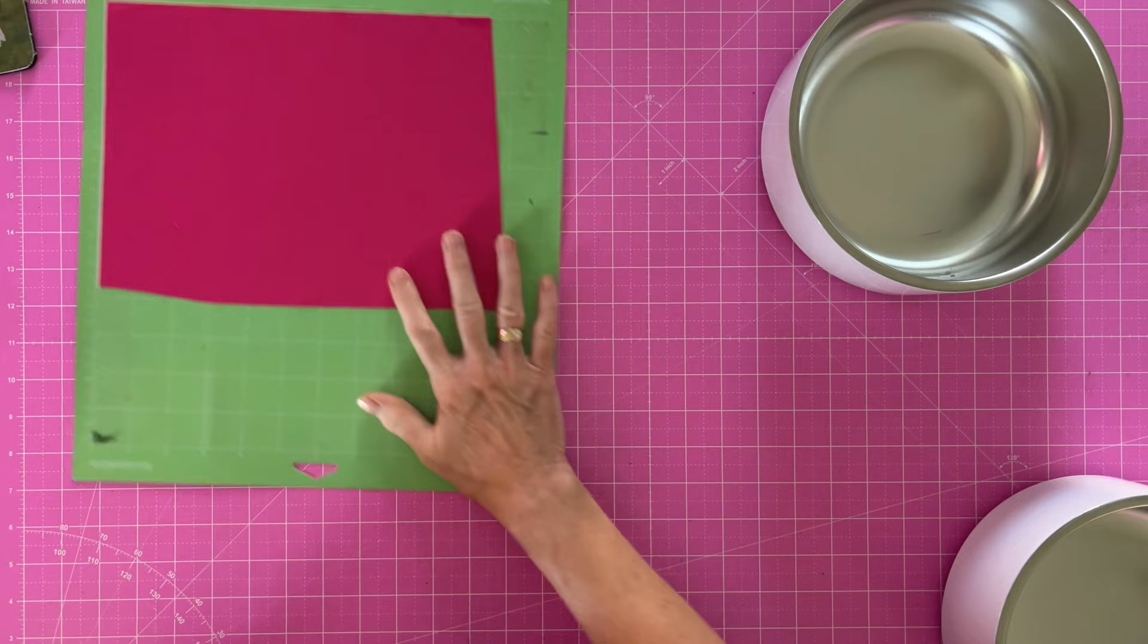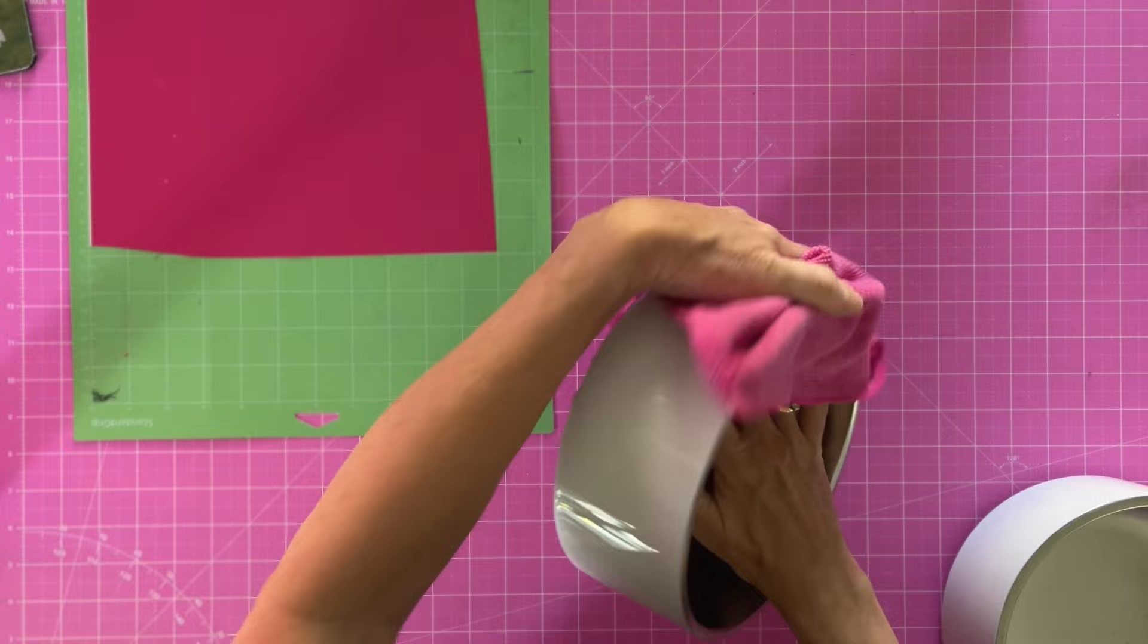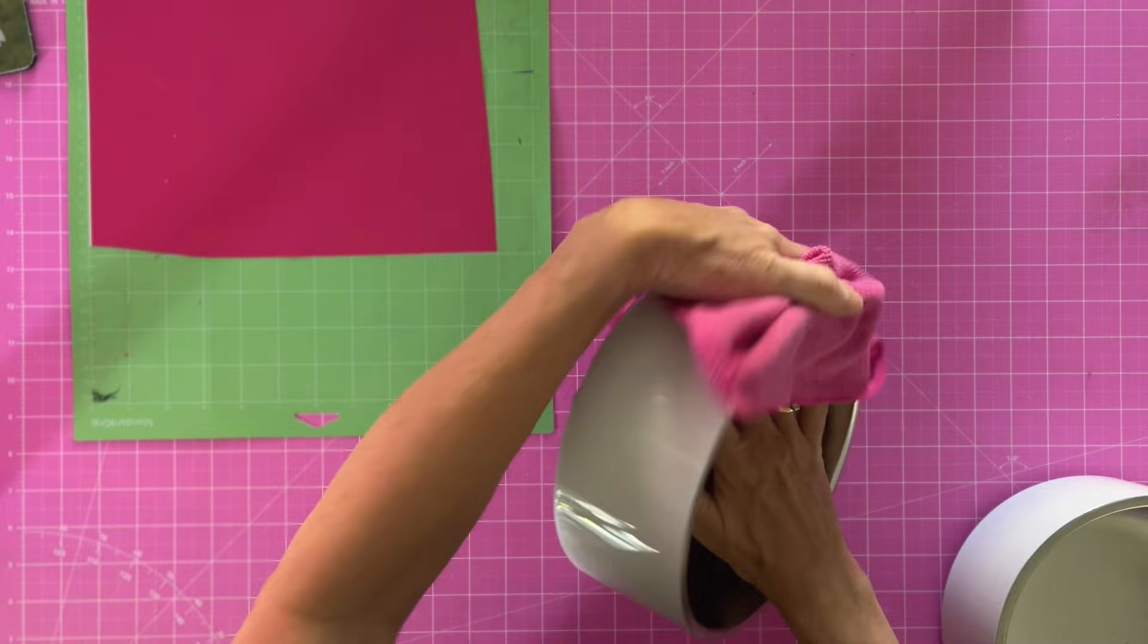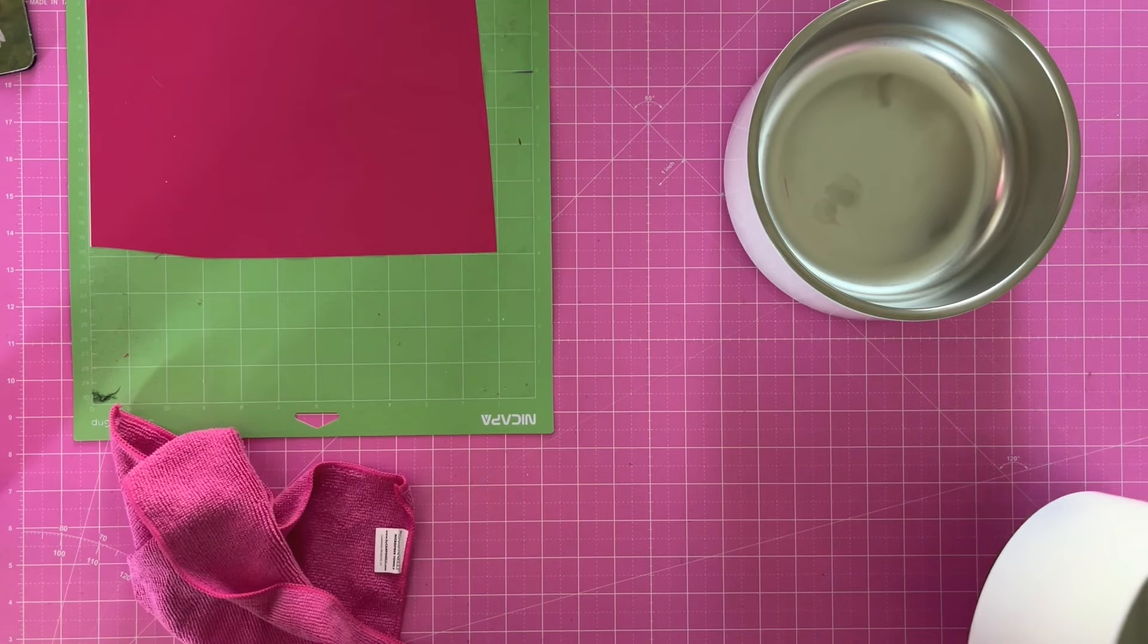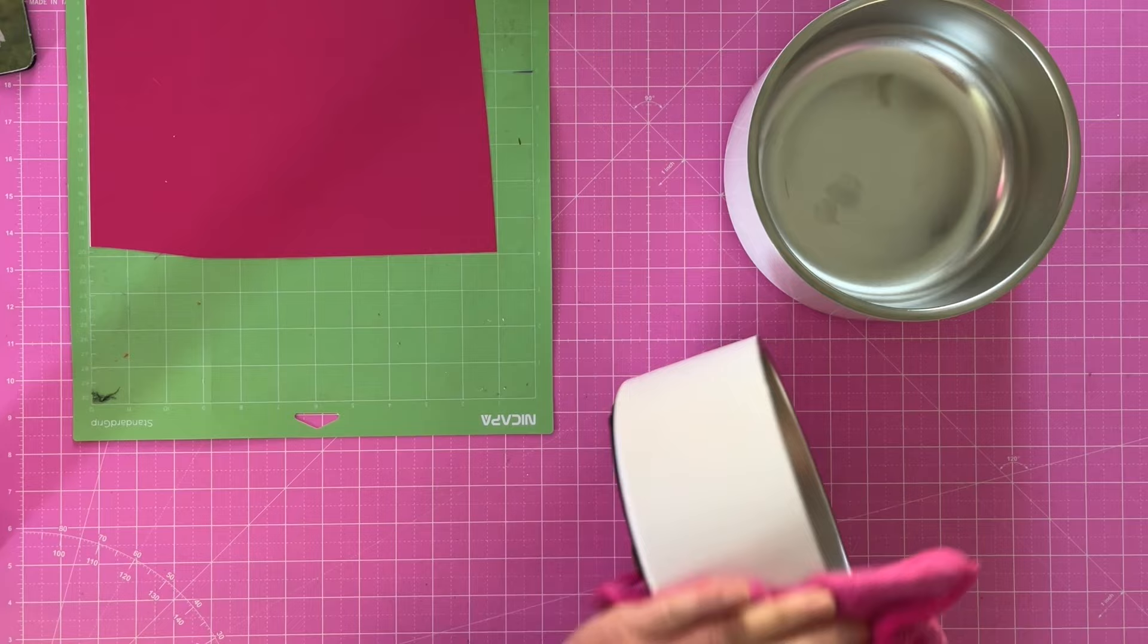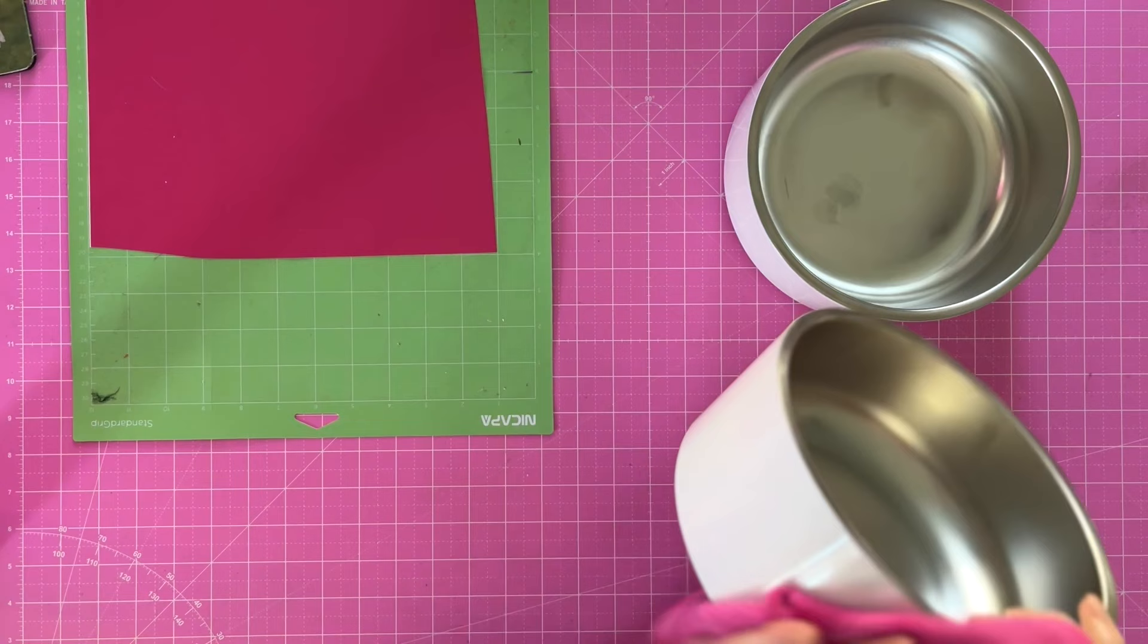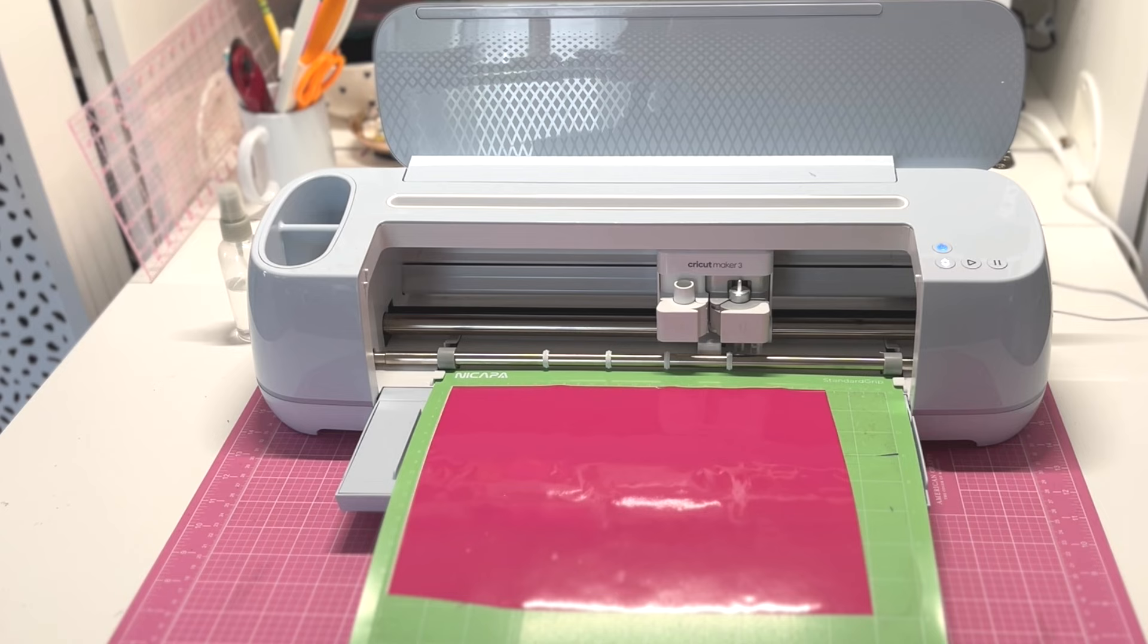I'm going to also use some denatured alcohol on my blank. This helps with not only sublimation, but it works with adhesive vinyl, making sure that everything sticks well. So it's not just for sublimation. Highly recommend you don't skip this step. You can use, if you don't have denatured alcohol, regular rubbing alcohol works. You could use Windex. Anything with a high alcohol content is going to work, but you just want to wipe it off. Make sure that you're using a lint-free cloth. Don't use a paper towel, and that will help your vinyl stick a little bit better. So let's go over to the Cricut.